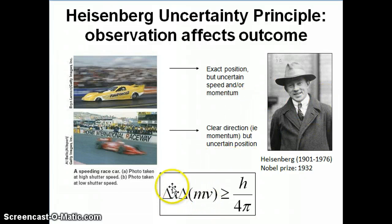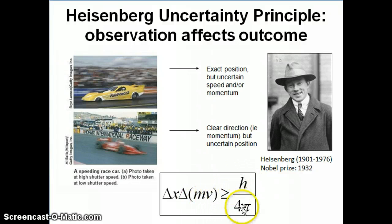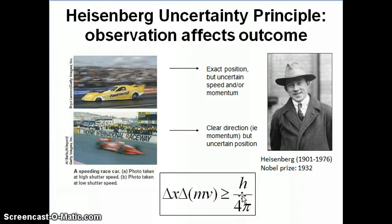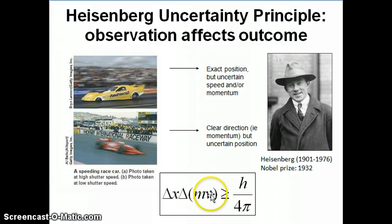What Heisenberg is saying is that the uncertainty in the position of a particle times the uncertainty in its momentum must be at minimum h over 4π. This product of measurement errors has to be at least that value or bigger. There is a fundamental limit to observation — you can't have a 100% precise measurement. The smallest possible error is h over 4π.